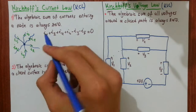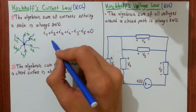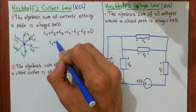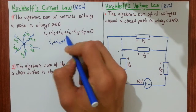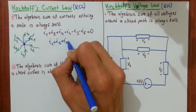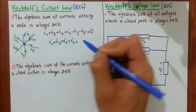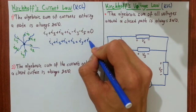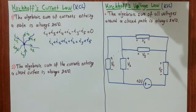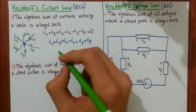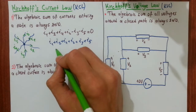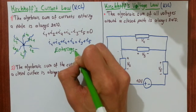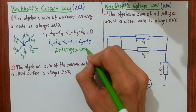You may also write this equation as: I1 plus I2 plus I4 plus I6 equals I3 plus I5. This means that the sum of leaving currents equals the sum of entering currents.